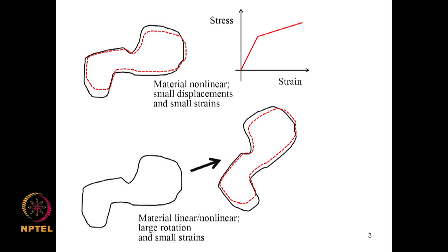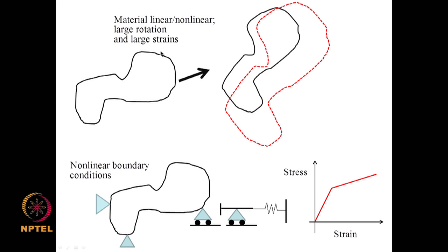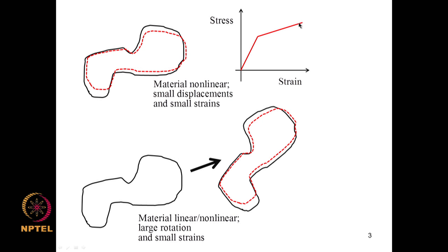All these non-linearities can coexist in a problem. In one case there are small displacements and small strains but there is material non-linearity. In another case material could be linear or non-linear but there are large rotations but small strains. Here material again could be linear or non-linear with large rotation and large strains. There can also be non-linearity associated with boundary conditions — a spring comes into action only when displacement exceeds a threshold, increasing system stiffness. In elastic cases loading and unloading paths trace each other, whereas in material non-linearity the unloading path differs from the loading path.